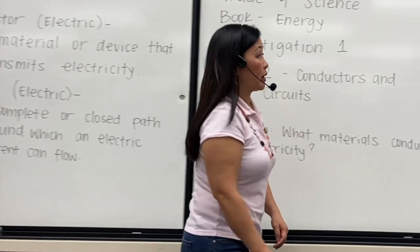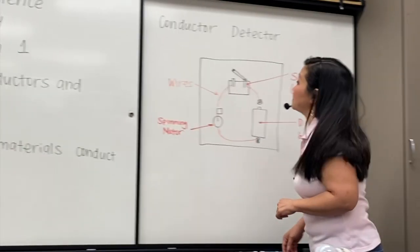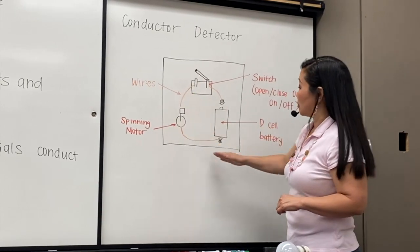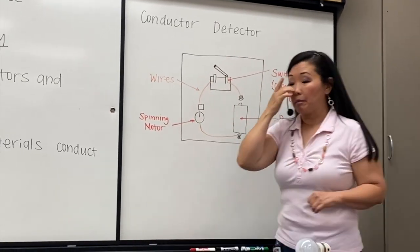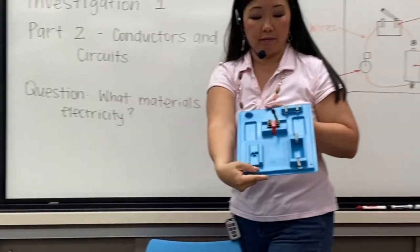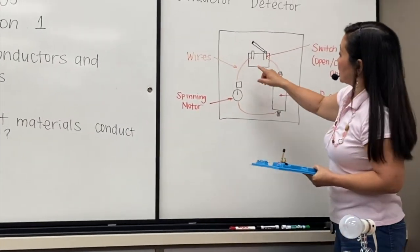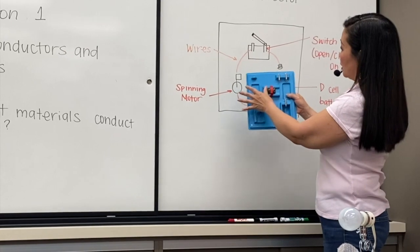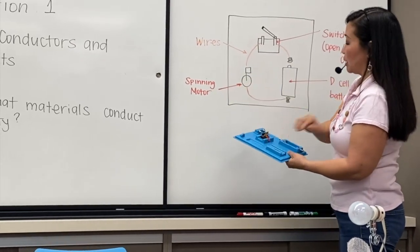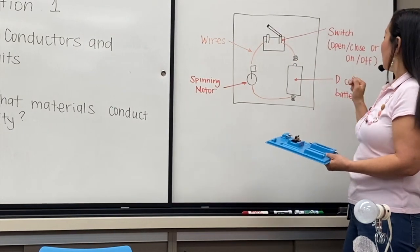Today we're going to make a conductor detector. This is the board we have — the blue board here. It has a switch, and a motor that I'm going to place here, and a D-cell battery there.